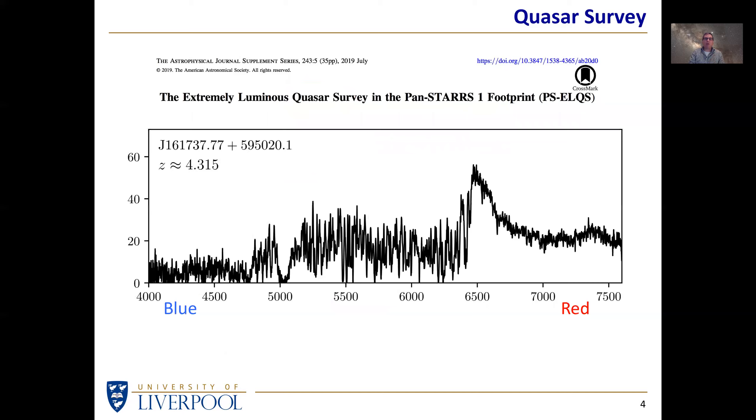One of the quasars that was surveyed by this bunch of professionals was this one, goes by the wonderful name of J161737 plus 595020. The ID of these quasars is simply their coordinates on the sky. This particular coordinate has a declination of plus 59, which tells us it's in the northern hemisphere, so it should be visible from the United Kingdom.